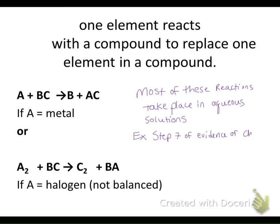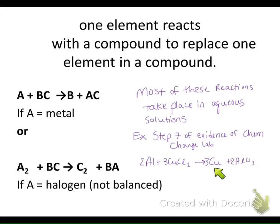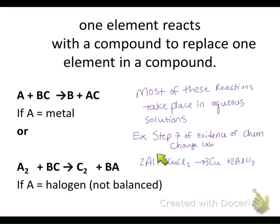For example, in step 7 of our evidence of chemical change lab, we had aluminum plus copper(II) chloride yields copper plus aluminum chloride. That copper(II) chloride was in an aqueous solution, so that was an example of a single displacement reaction that you saw last week.